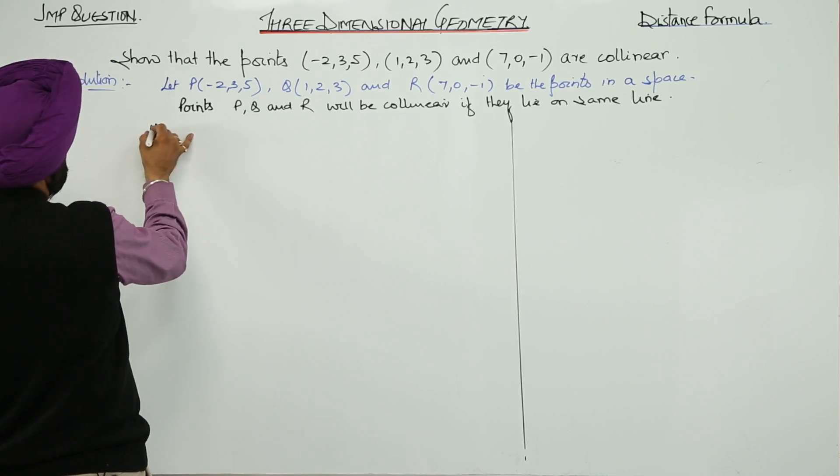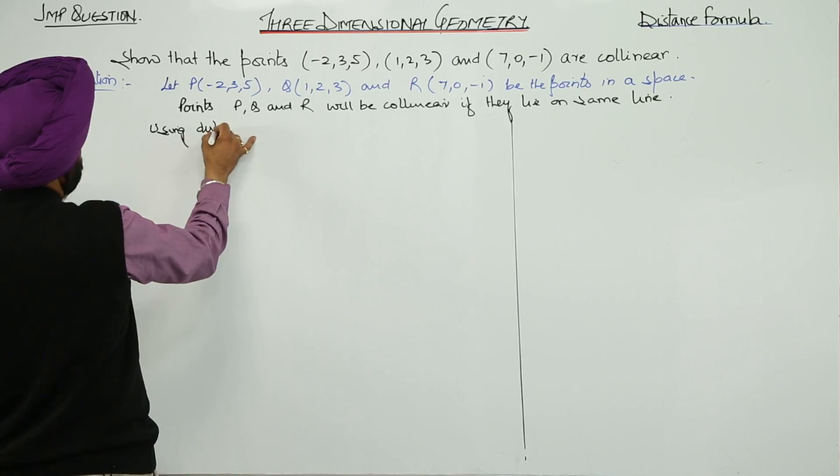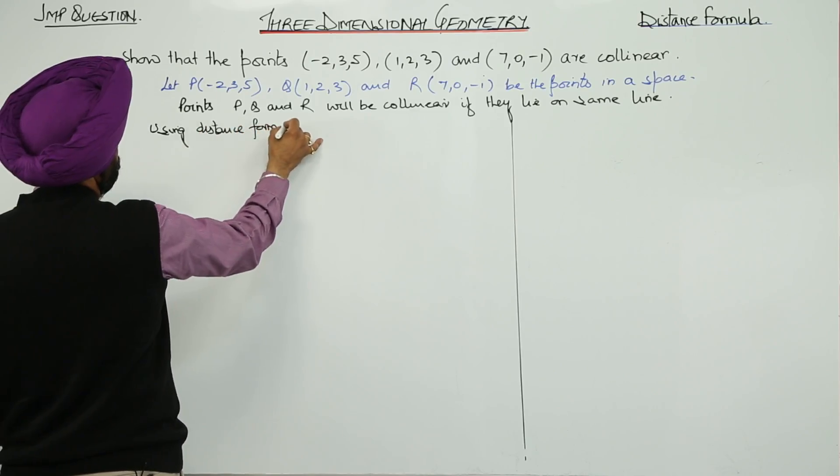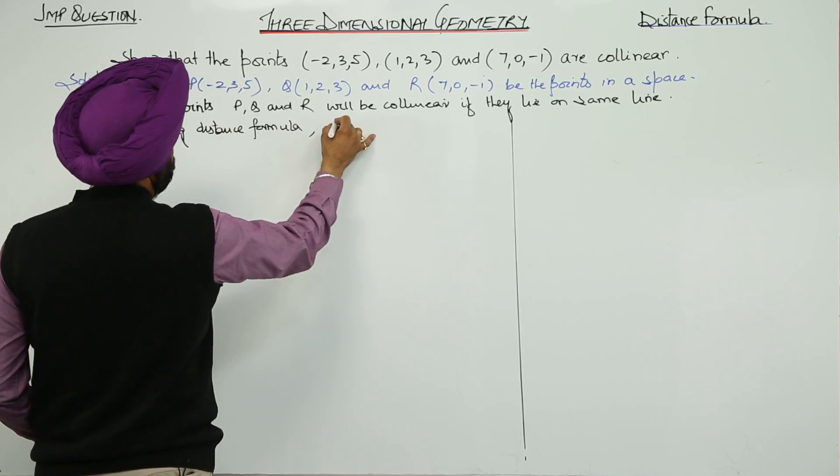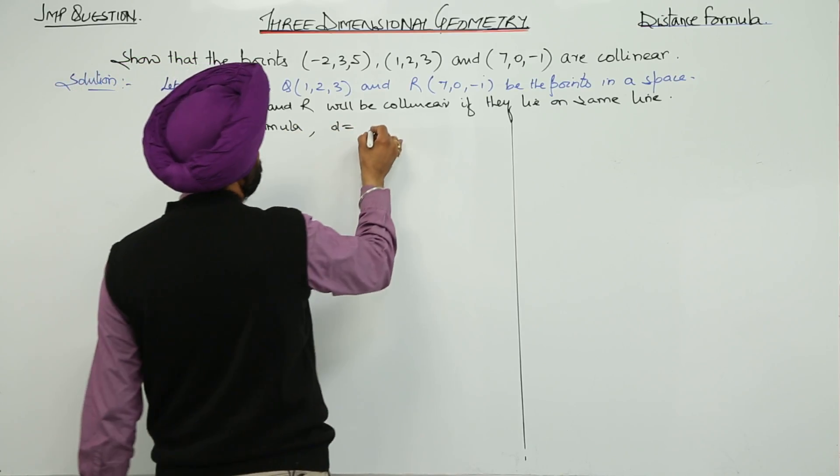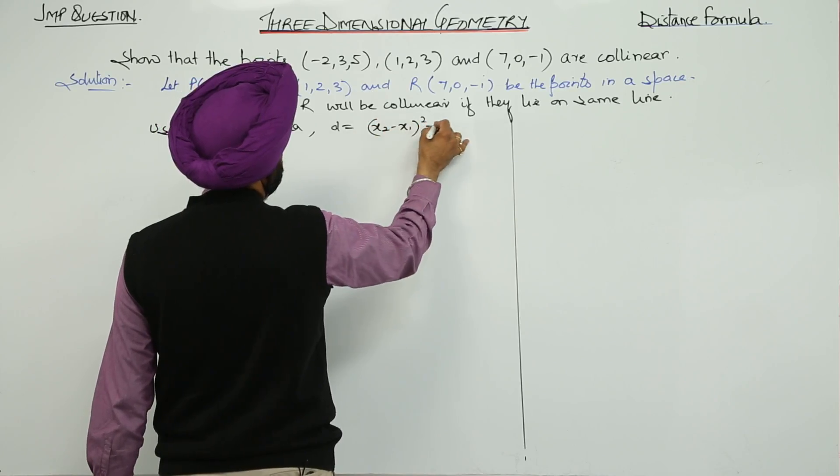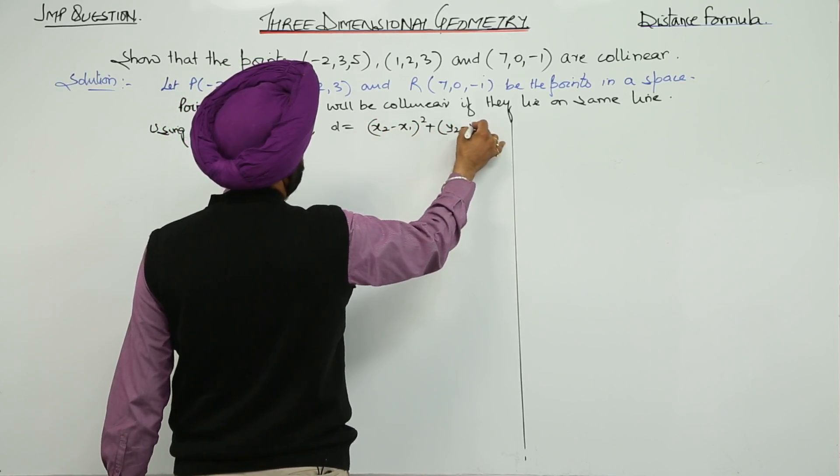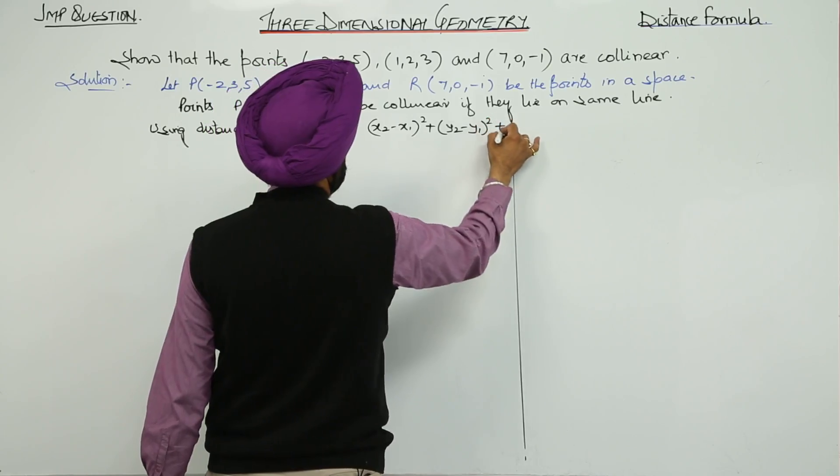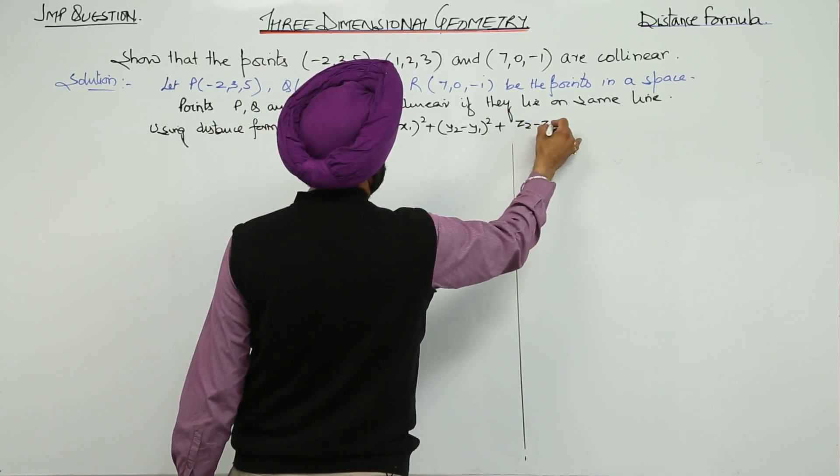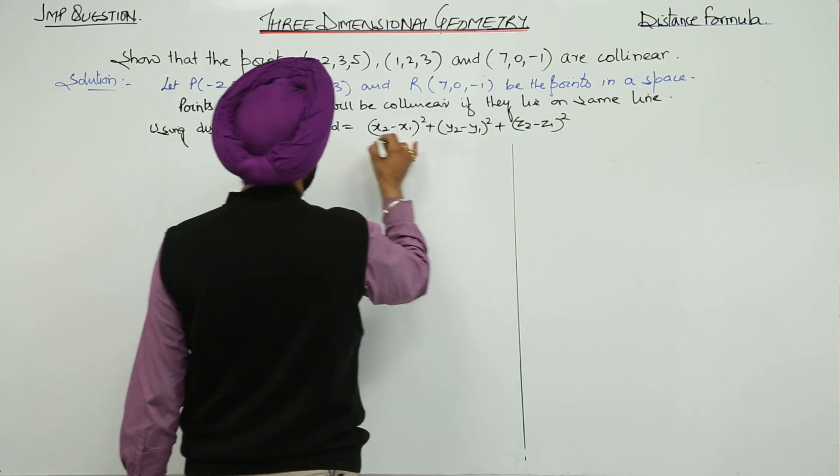Using distance formula, d equals square root of (x2 minus x1) whole square plus (y2 minus y1) whole square plus (z2 minus z1) whole square.